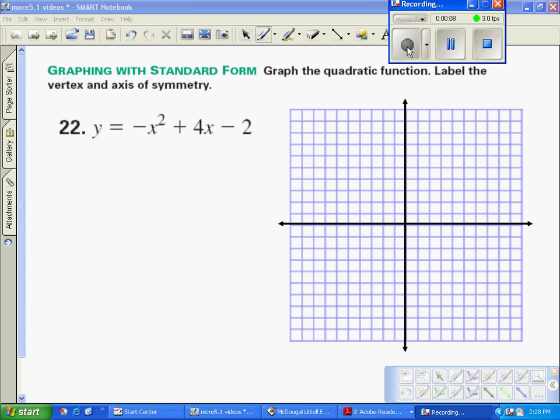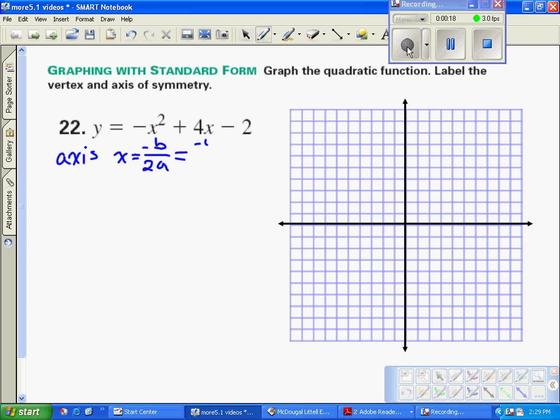The first thing we need to do is find the axis of symmetry. X is equal to negative b over 2a, which is negative 4 over 2 times negative 1, or negative over negative is positive 2. So we want to first graph that axis of symmetry at x equals 2 and label it x equals 2.